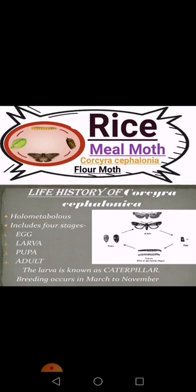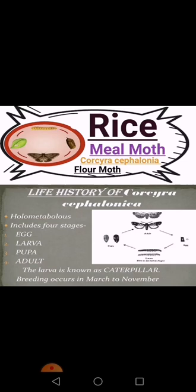Life history of Corcyra cephalonica: it is holometabolous, containing four stages of metamorphosis. Metamorphosis is a change of shape and form from larva to adult — a conversion of larva into a mature adult. It includes four stages: egg, larva, pupa, and adult. The larva is also known as a caterpillar.